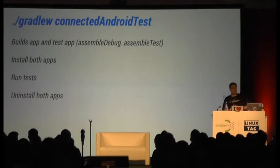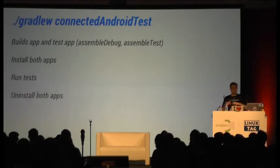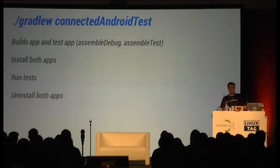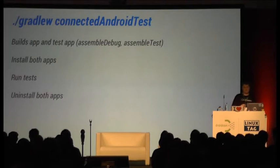If we have a closer look at the connectedAndroidTest task, it basically does everything we need: it builds both APKs, installs both on a device, runs the tests, and uninstalls both after that.